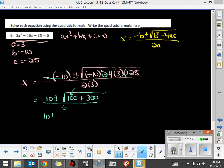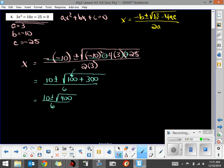So it's 10 plus or minus the square root of 400 divided by 6. Well, 400 is a perfect square, so it ends up being 10 plus or minus 20 all over 6. I've got two different things I need to do to find my final answers.